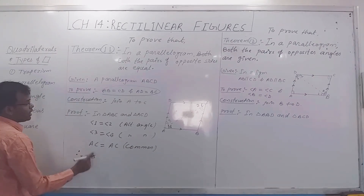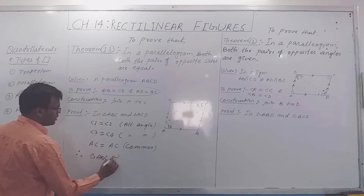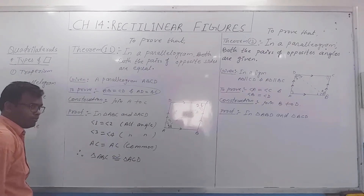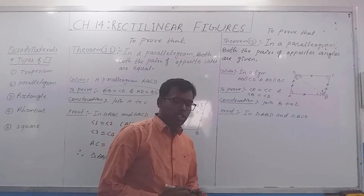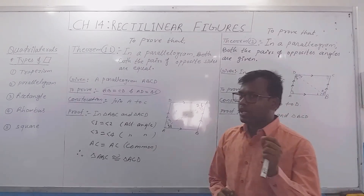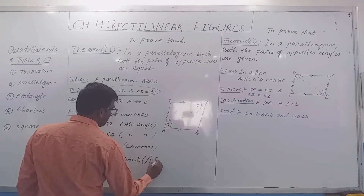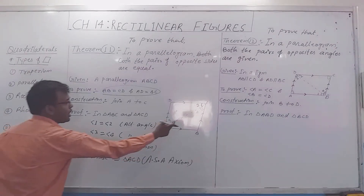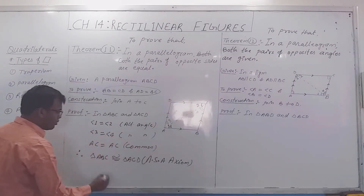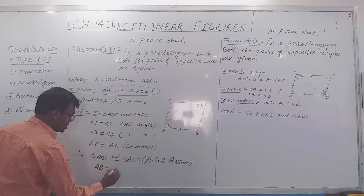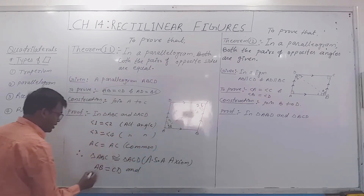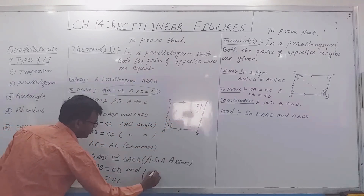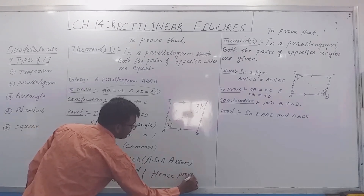And AC equals AC, which is common. Therefore, triangle ABC is congruent to triangle ACD by the ASA property — two angles and the included side. Therefore, if these two triangles are congruent, the opposite sides will be equal: AB equals CD and AD equals BC. Hence proved.